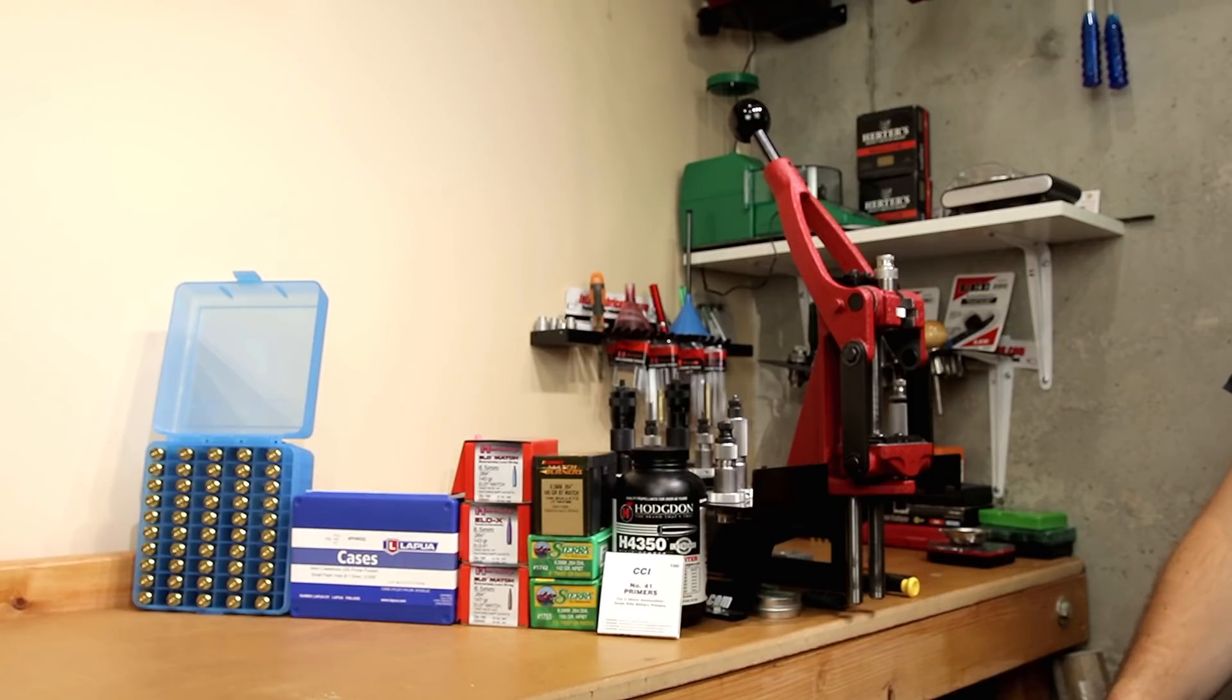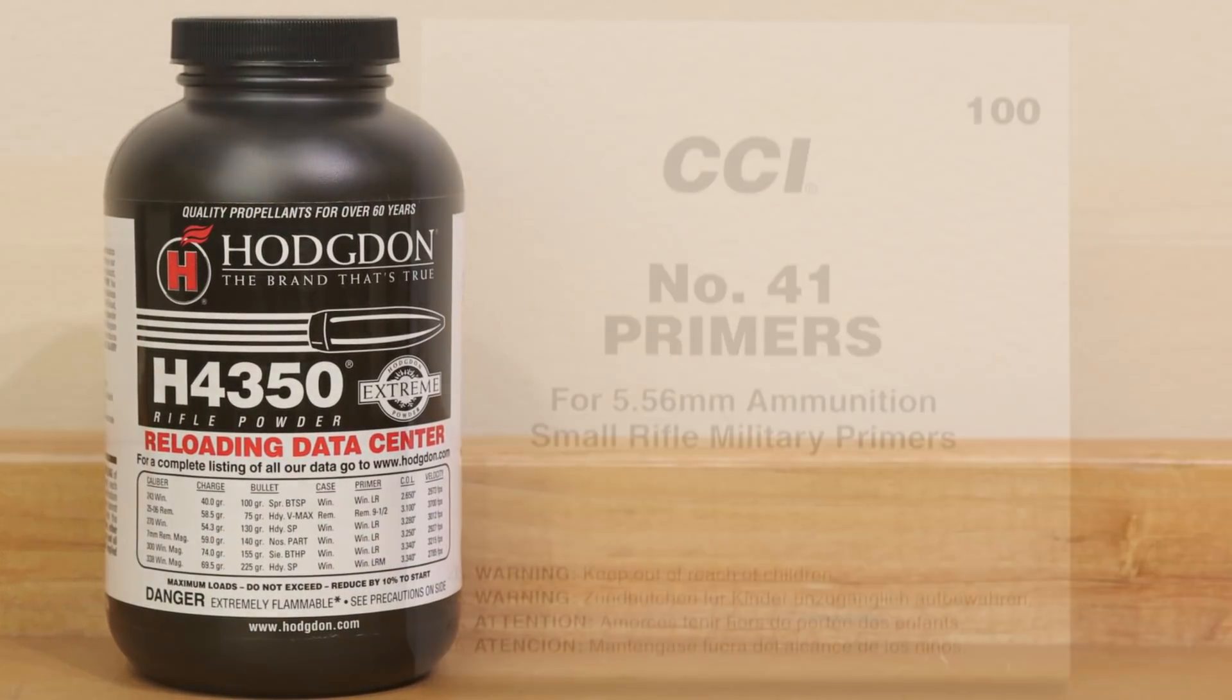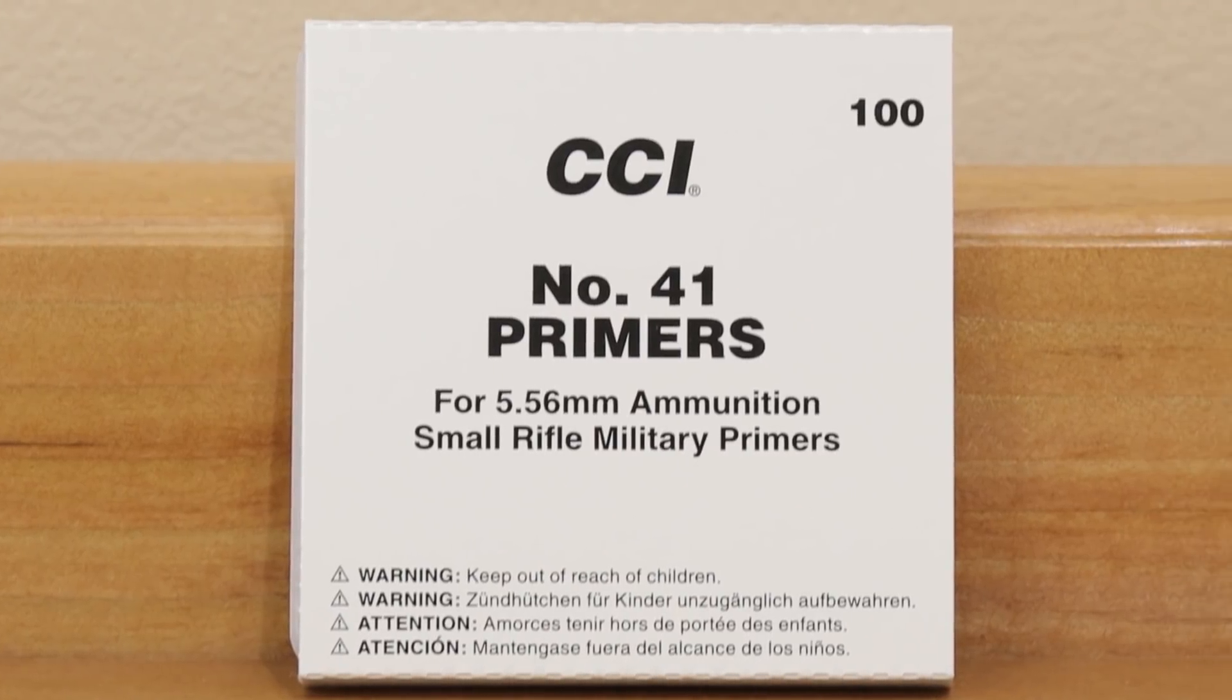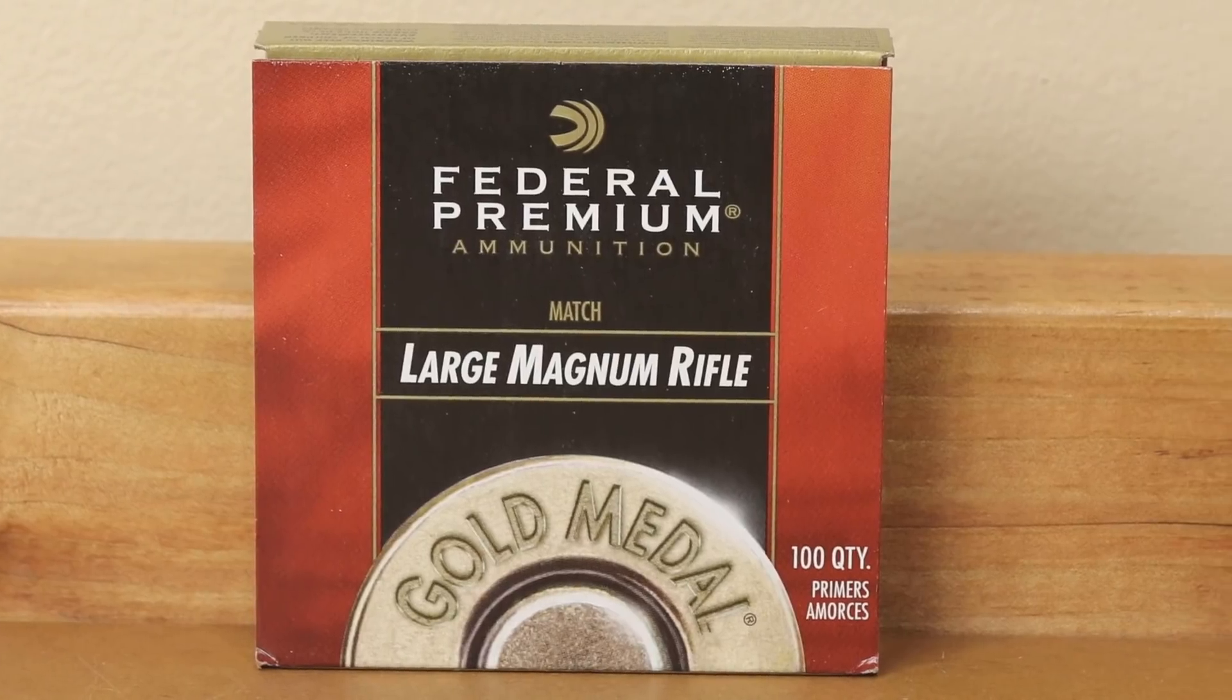Some consistency among the groups - we're actually locking down the powder and charge. All of our data today was generated with Hodgdon's H4350. For all of our small rifle primer brass, we were using the CCI-41. And for our large rifle primer brass that we used basically just for break-in ammo, we were using the Fed215M.